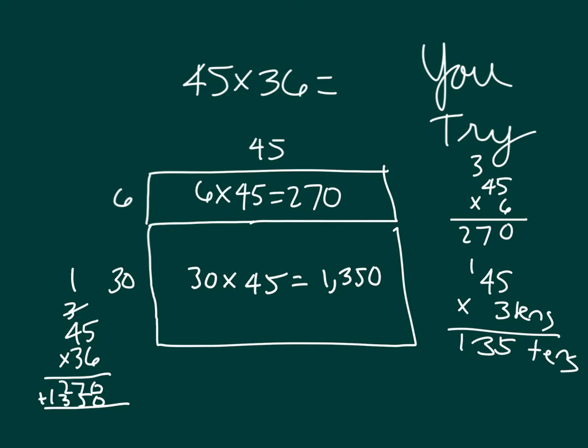And, of course, we would add them together to get that same answer. So when we add 1,350 to 270, we get 1,620 as our answer.